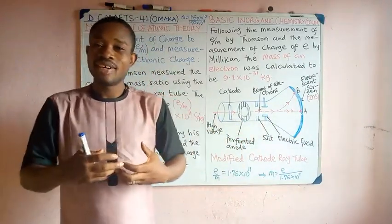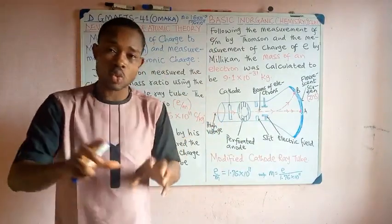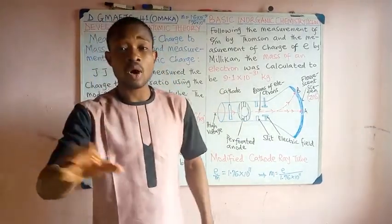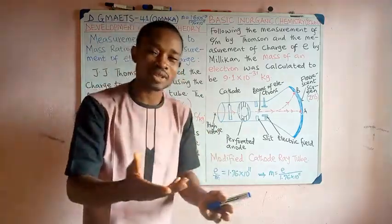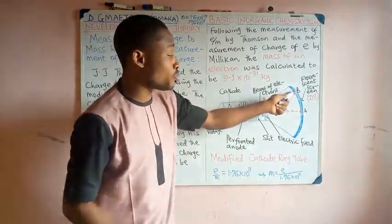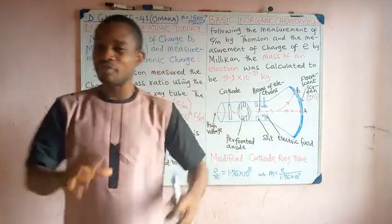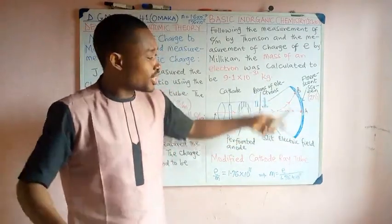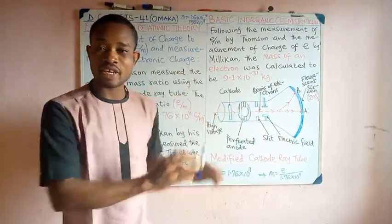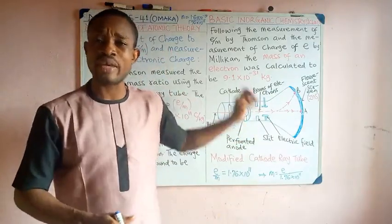The positive field attracts the negatively charged cathode rays and bends them away from their straight path. When there is bending in a circular path, we talk about radius, and the concept of centripetal force applies. It is also possible to return the bright spot from B back to A by introducing a negative field that repels the cathode rays back. In the next video, we will derive the velocity of electrons in this modified cathode ray tube in the field.